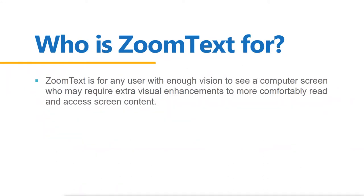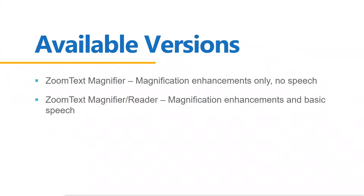Who is ZoomText for? It's for any user with enough vision to see a computer screen who may require extra visual enhancements to more comfortably read and access screen content. It has basic screen reading features because it assumes the user has enough vision where they don't need really robust screen reading. Available versions include ZoomText Magnifier Only, which doesn't have any speech, and ZoomText Magnifier Reader, which includes both magnification enhancements and speech.